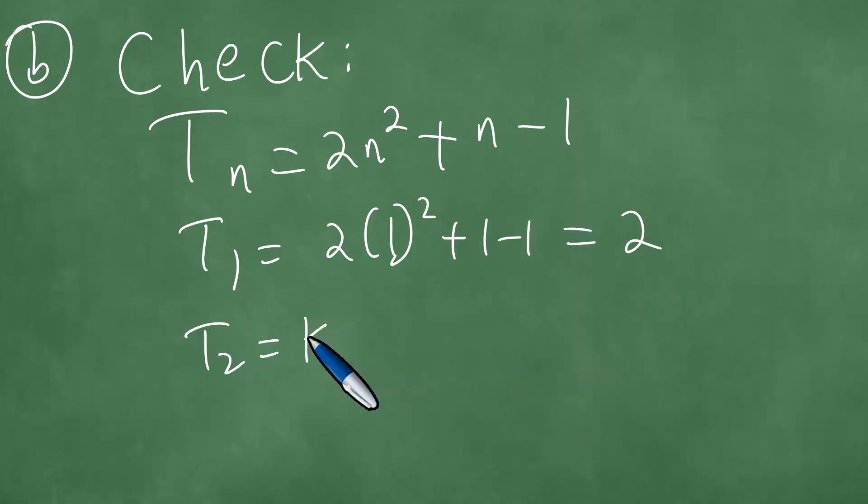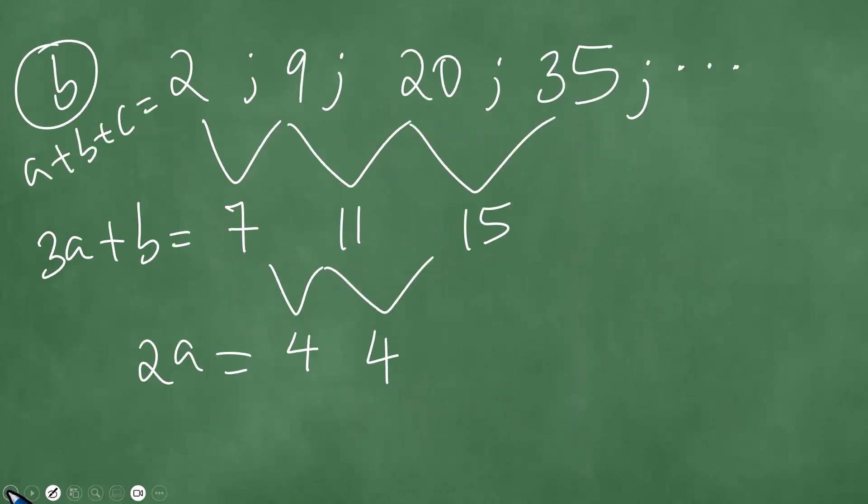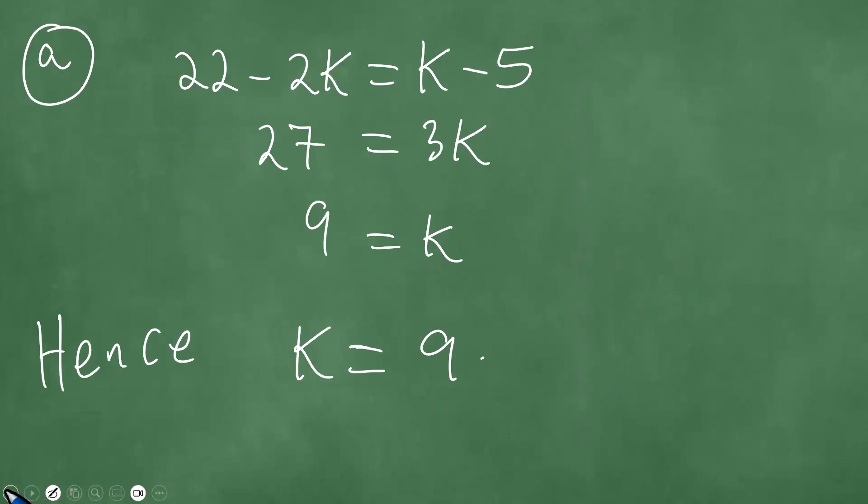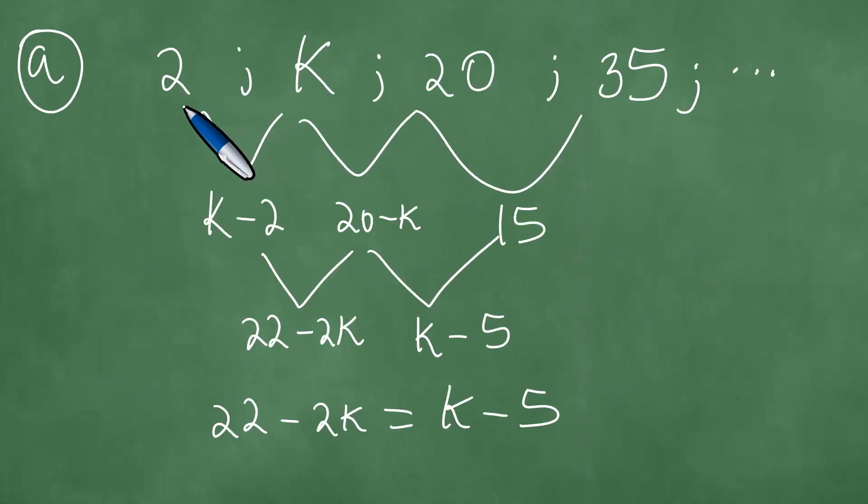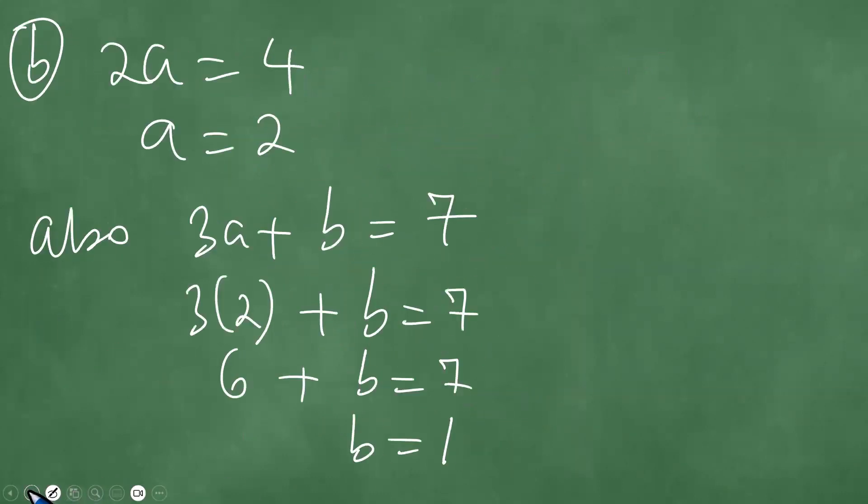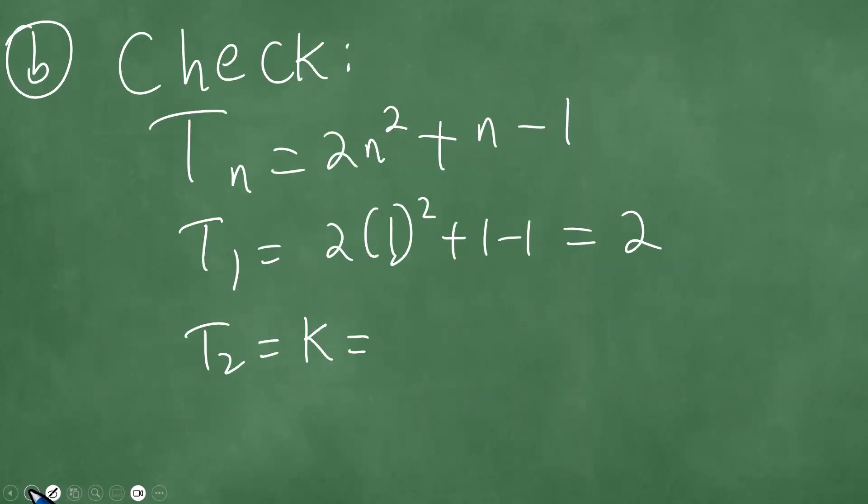t2, in this case, equals k. Remember that t2 equals k, and we remember that k is 9. So obviously, we recall that we had the sequence 2, k, 20, and 35. But we got k equals 9, so let's just verify if this is the case. So this is 2 into 2 squared plus 2 minus 1, which is 2 squared, 4 by 2, 8, plus 2, 10, minus 1, which is exactly a 9.